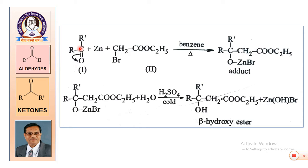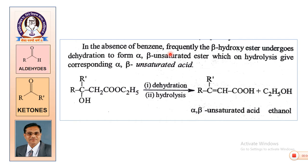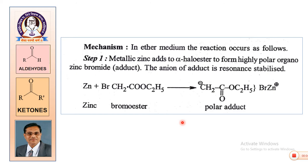In the general reaction, a carbonyl compound reacts with zinc and an alpha-bromoethyl ester. In the presence of benzene or ether, the reaction gives an adduct. The adduct is hydrolyzed using sulfuric acid to get the beta-hydroxy ester. In the absence of benzene, dehydration takes place.